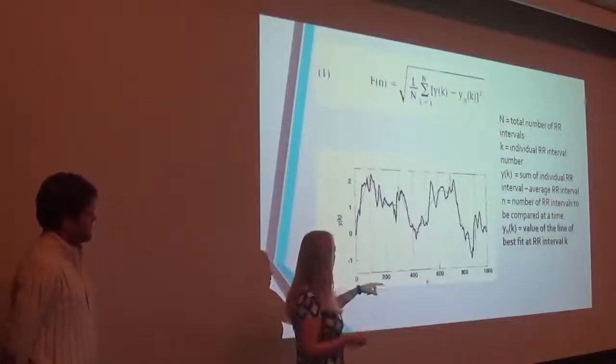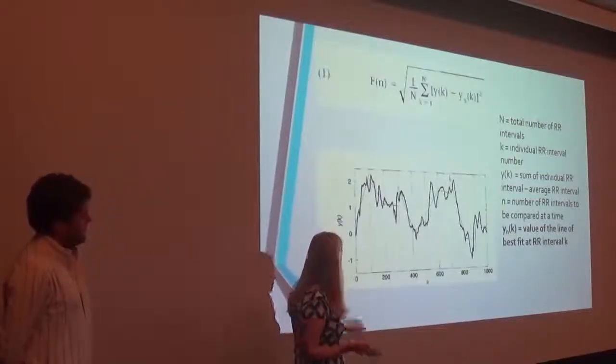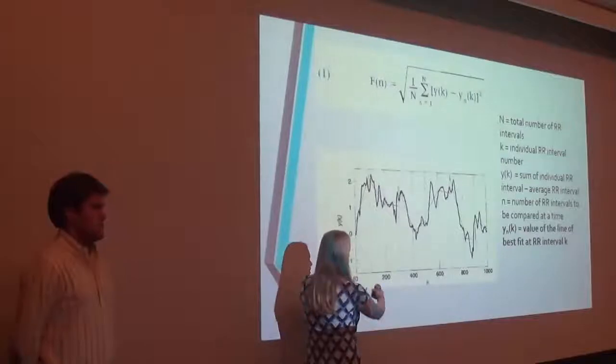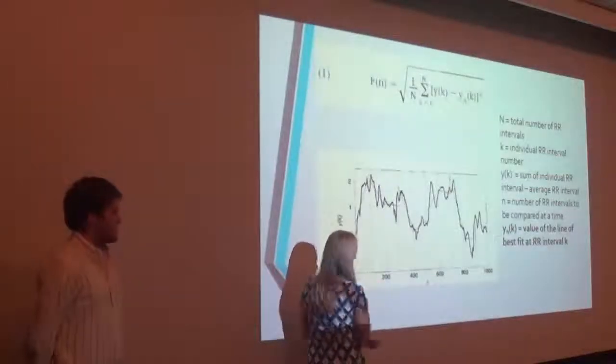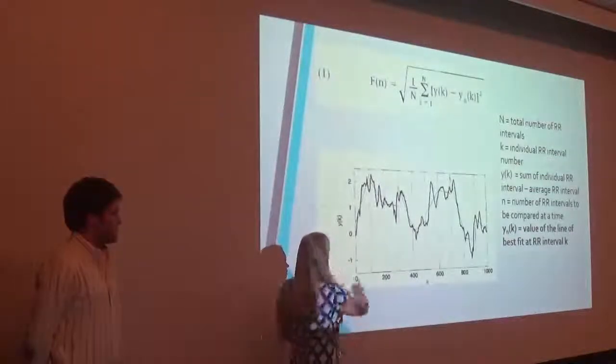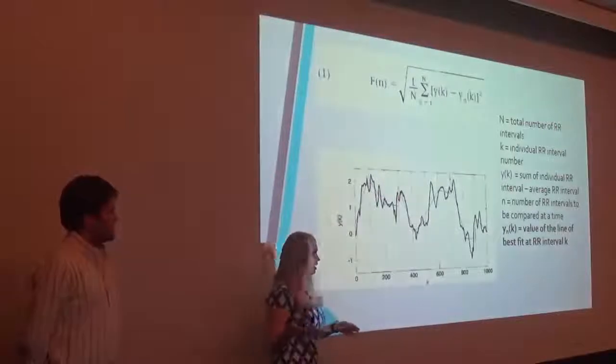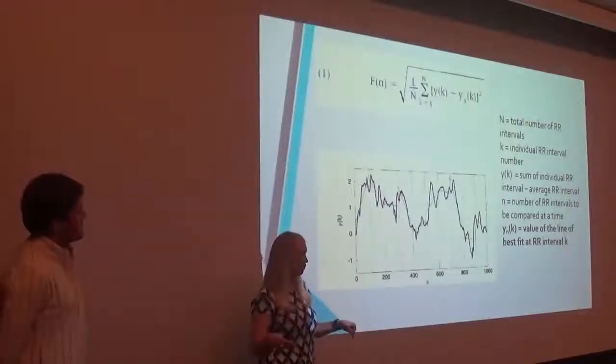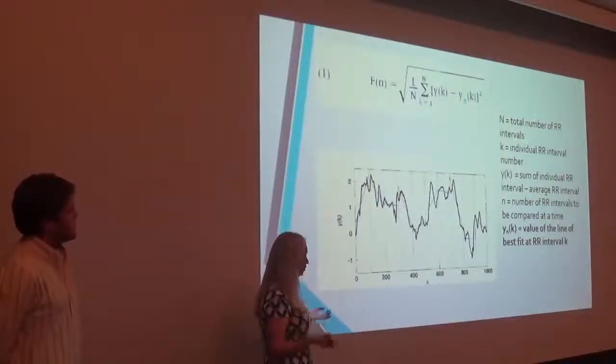So then the y sub n of k is the value of the line best fit. So what we're doing is this is for 100 heartbeats at a time, so your n is 100. We're taking the y of k, which is again the difference between one heartbeat and the average heartbeat, and the sum of those over however many heartbeats there's been.